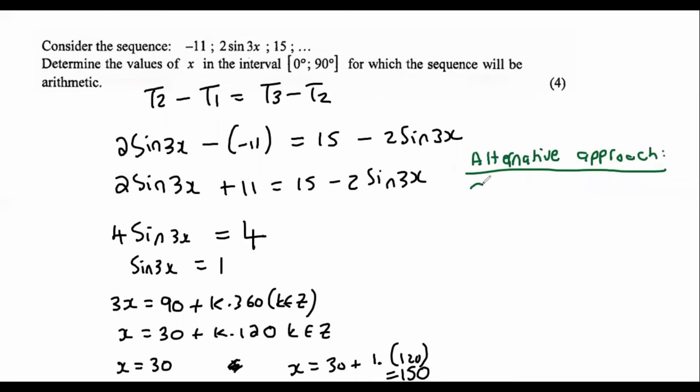So what you would do is you would say sin 3x is equal to 1, and then you would go get the reference angle on your calculator. So the reference angle would be when you say sin inverse on your calculator of 1, and that would give you 90 degrees. And then you would say that sin is positive in quadrant number 1 and quadrant number 2. So for quadrant number 1, you would say that 3x is equal to 90 plus k times 360, and so x would be equal to 30 plus k times 120.